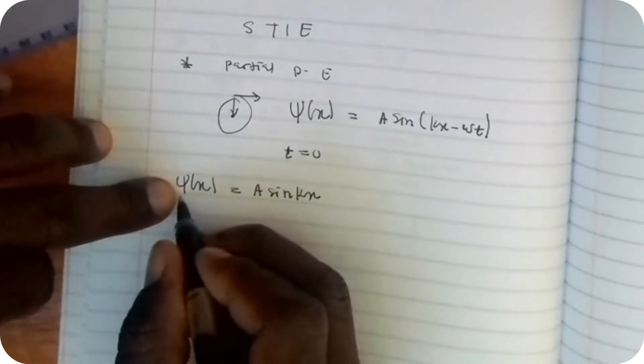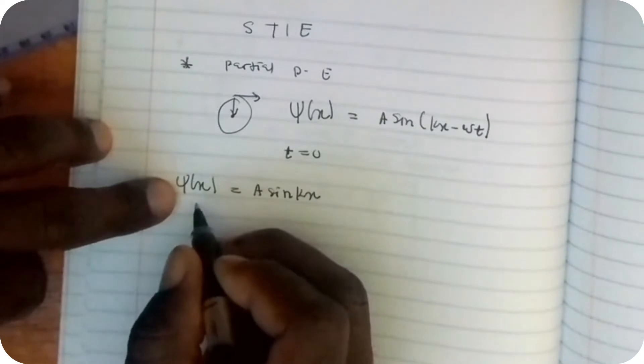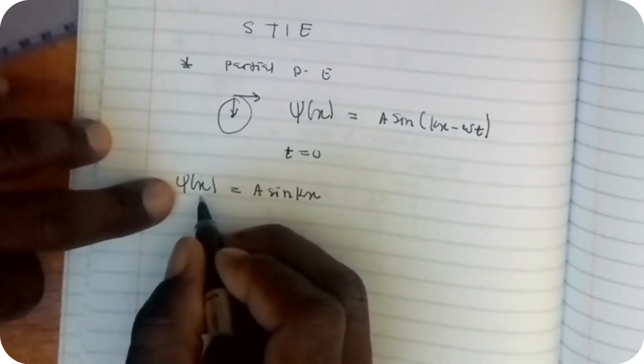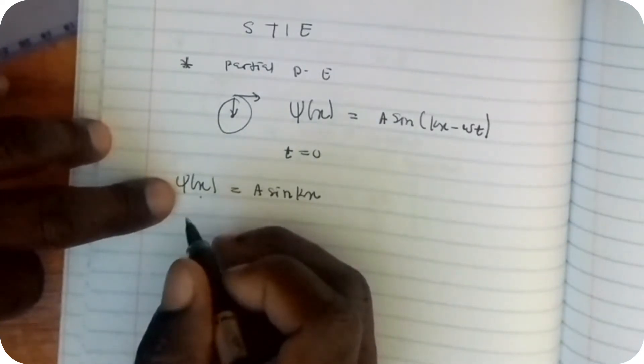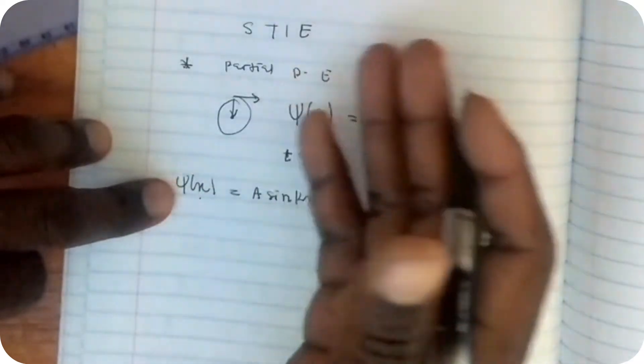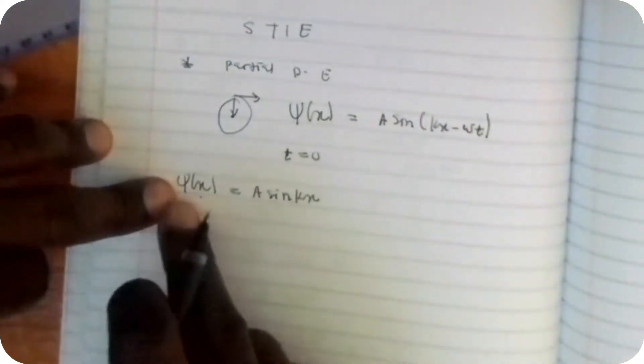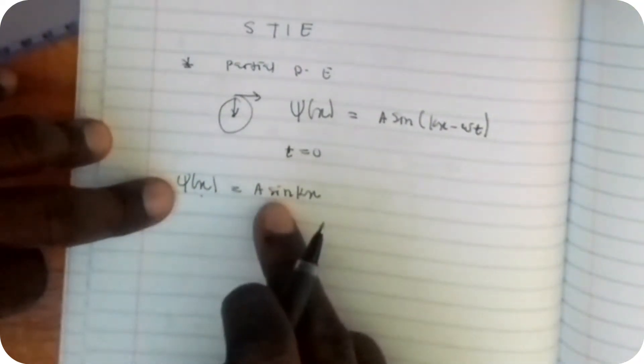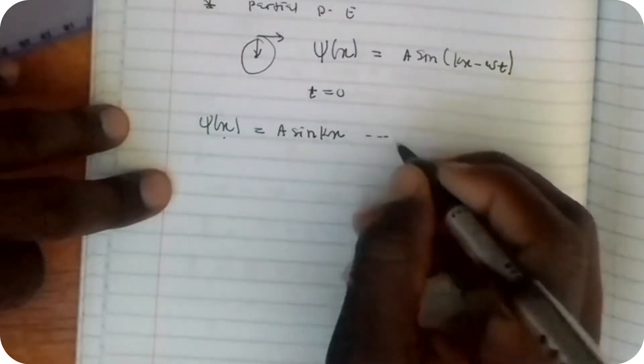Remember, ψ is just a Greek symbol, and this is the wave function in terms of x. Just as we can say the function of y in terms of x is y(x,t), this is ψ(x) equals A sin(kx). This is our equation 1.